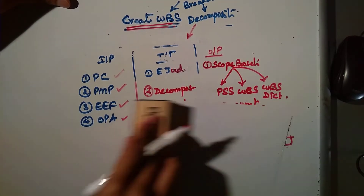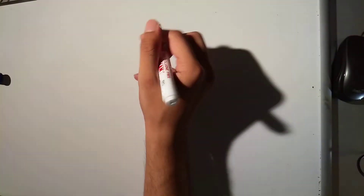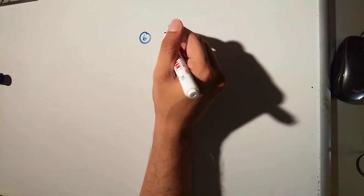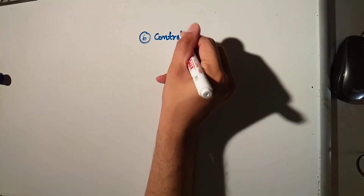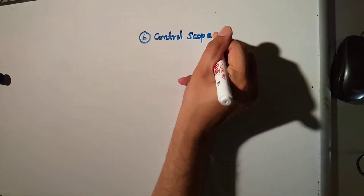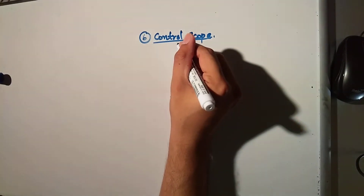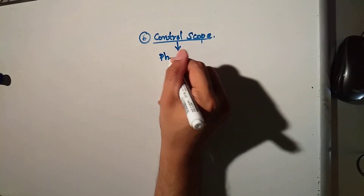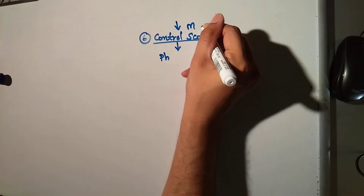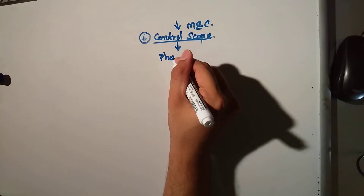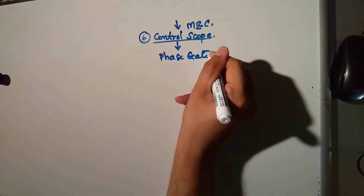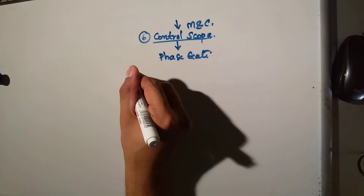The next process is Validate Scope, but personally I prefer to go to Control Scope first — that is the sixth process in chapter five, Scope Management. Control Scope is a monitoring and controlling process. It is like a face gate — you are comparing between what was planned and what was executed.